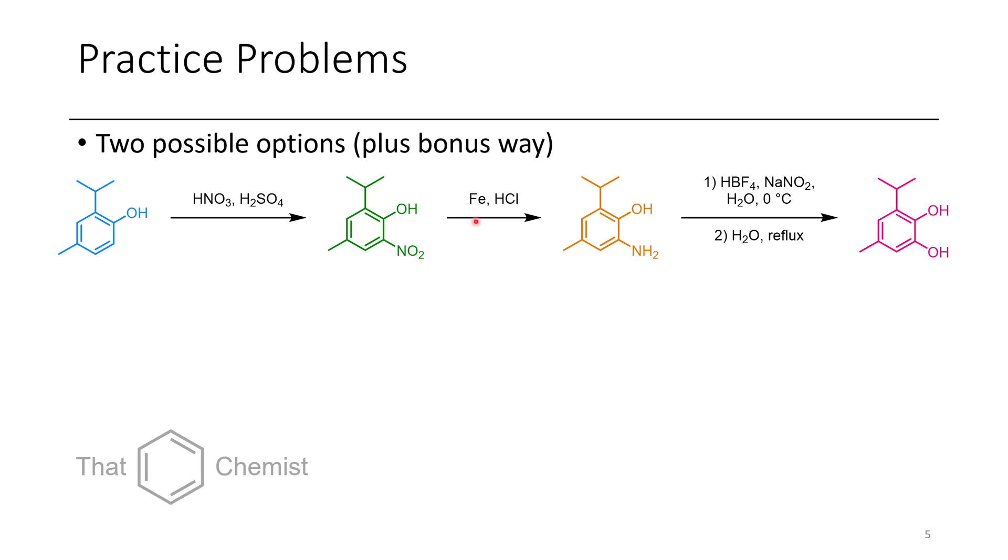Once the nitro group's been introduced, we can once again reduce this nitro group using iron and HCl to an aniline, and subsequently convert the aniline into a diazonium using HBF4. In a second step, we'll do a reflux with water, which I've just kind of summarized here, to give us the catechol product.